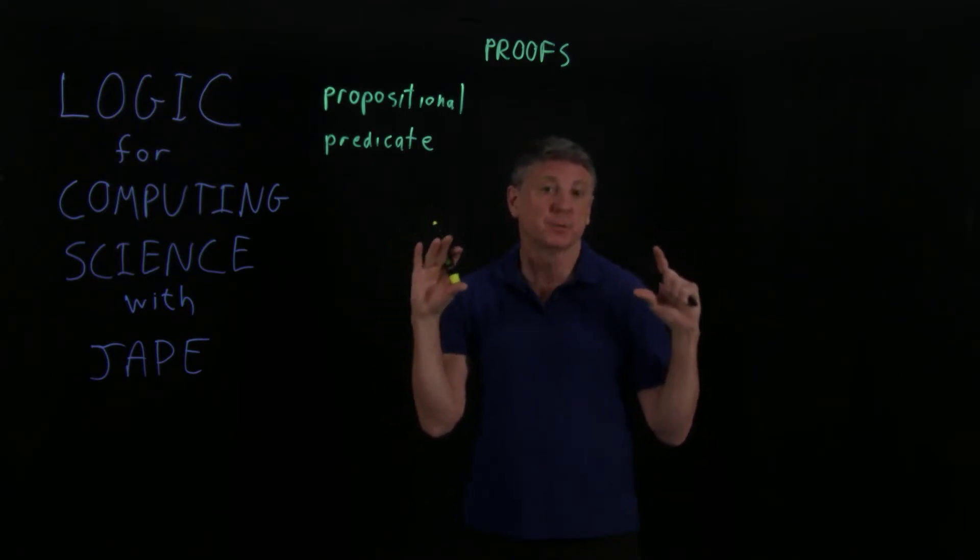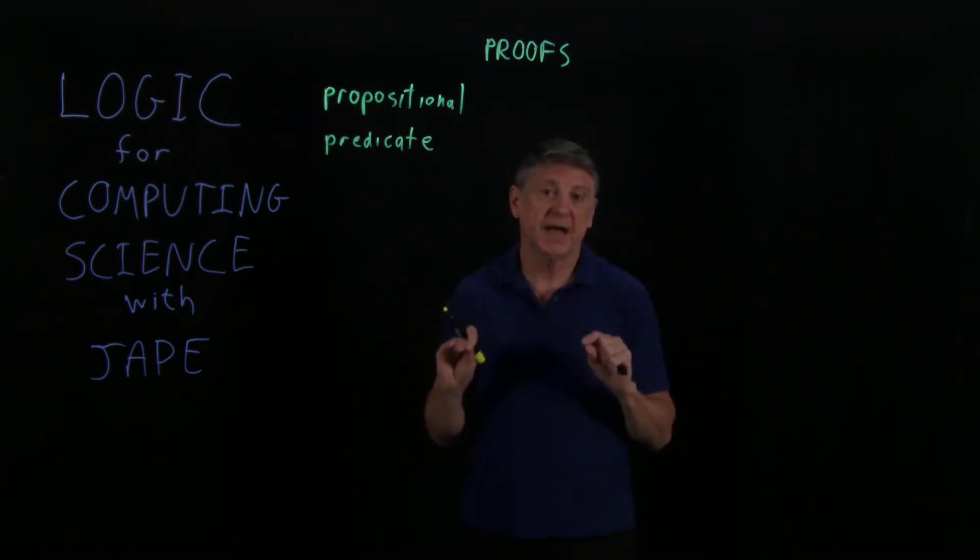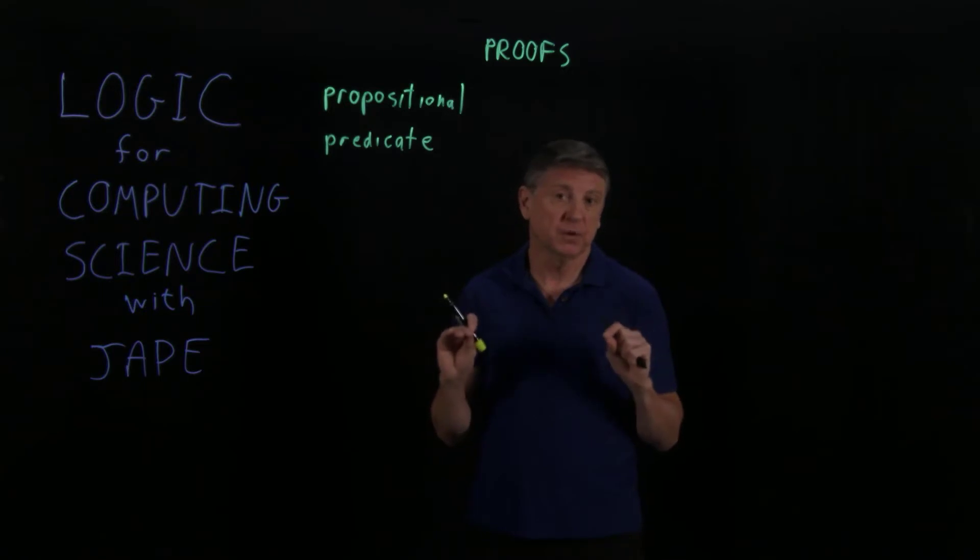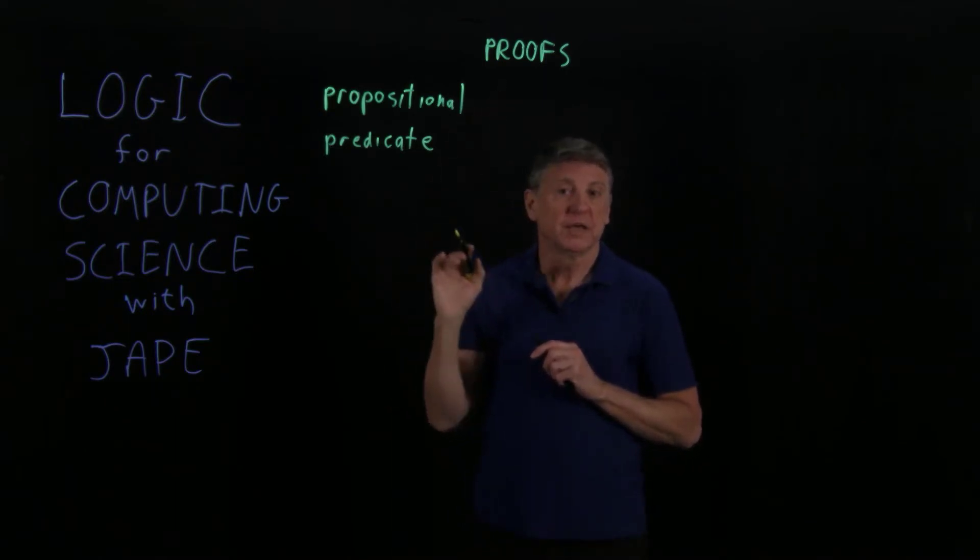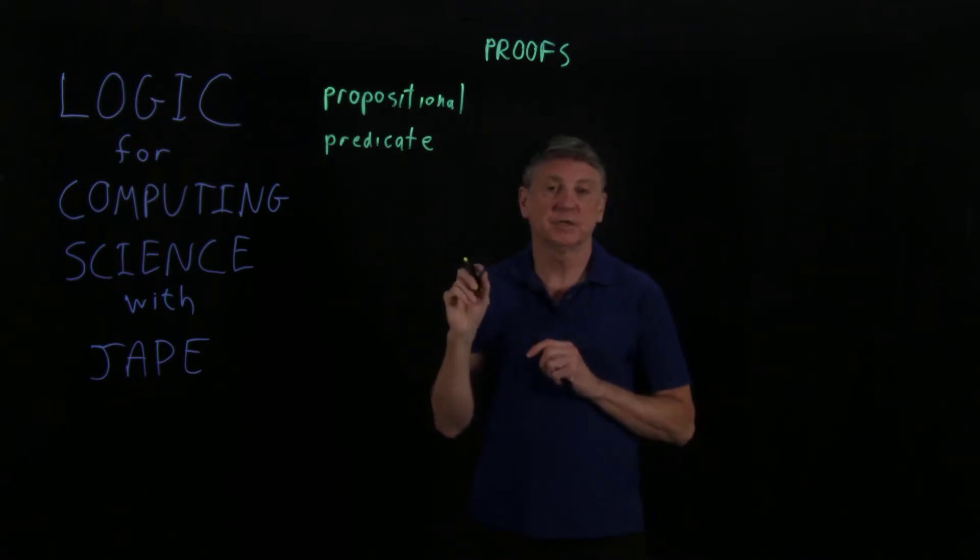We begin with a group that are called premises. These are ones that, for the purpose of argument, we're going to take as true. And then there will be a single statement at the bottom, and that'll also be a well-formed formula, and that will be something that we'll call the conclusion. And what we want to do is prove by some rules that the premises lead to the conclusion.